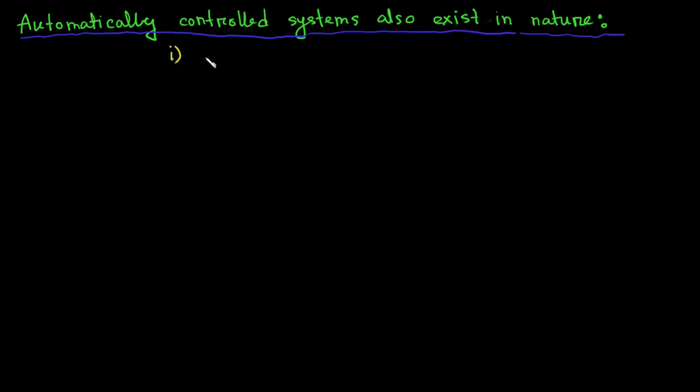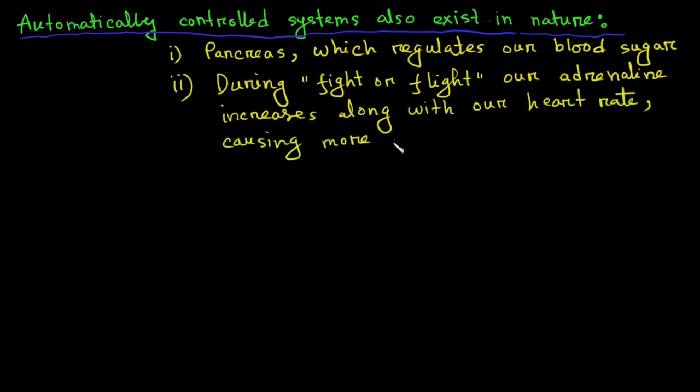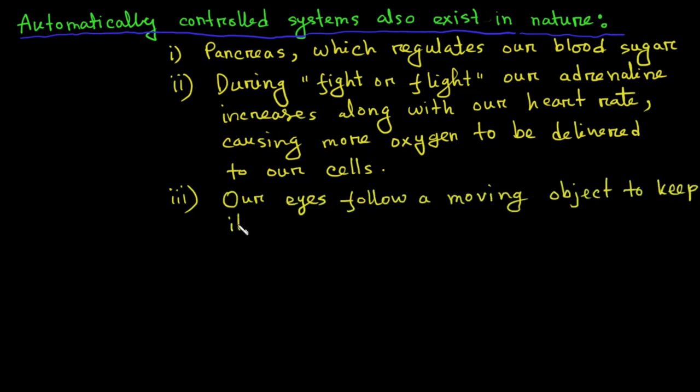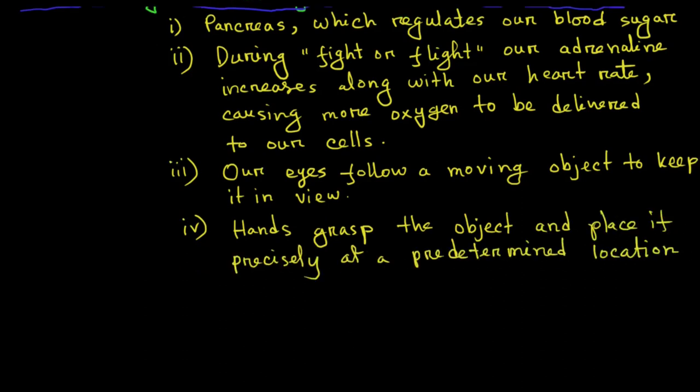We are not the only creators of automatically control systems. These systems also exist in nature. Within our own bodies are numerous control systems such as the pancreas which regulates our blood sugar. In the time of fight or flight our adrenaline increases along with our heart rate causing more oxygen to be delivered to our cells. Our eyes follow a moving object to keep it in view. Our hands grasp the object and place it precisely at a predetermined location.